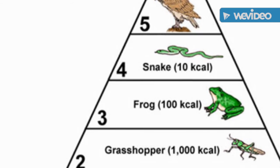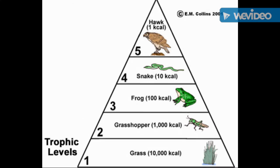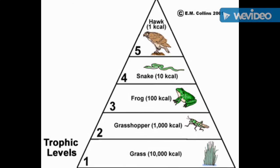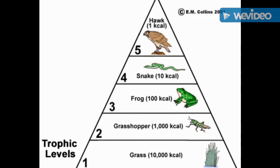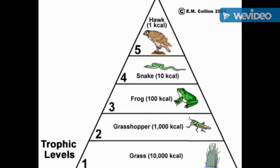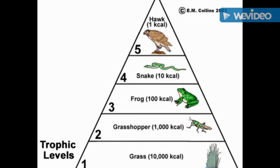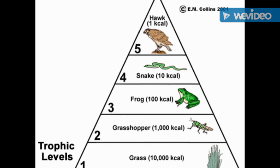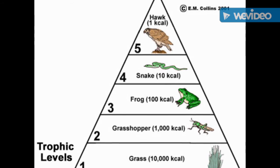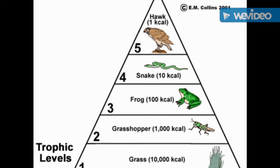This same process can be repeated for each of the levels, which is why the tertiary consumers only get a very small amount of energy, and why they can't support a huge population.